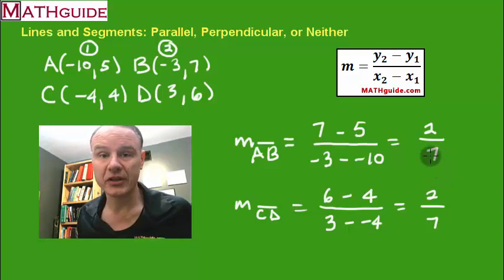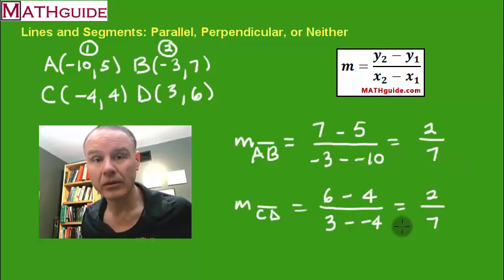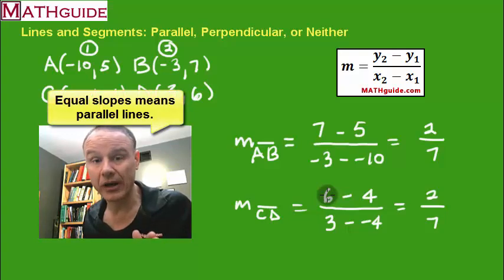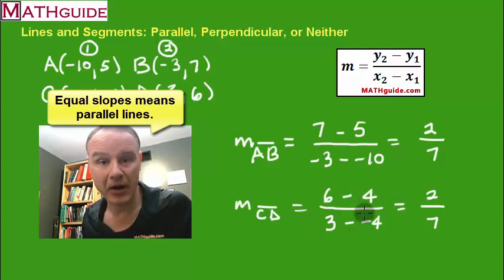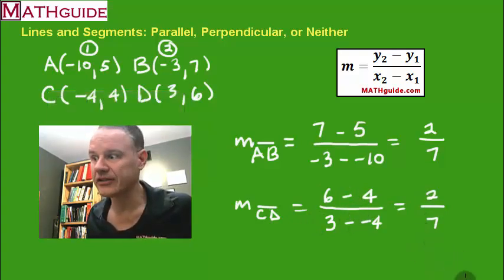What does it mean when slopes are equal? Well, I know that by looking at that graphic we had up earlier, that when slopes are equal, I know that I'm dealing with parallel lines. There you go. These are parallel lines. It's just that easy. Let's take a look at another example.